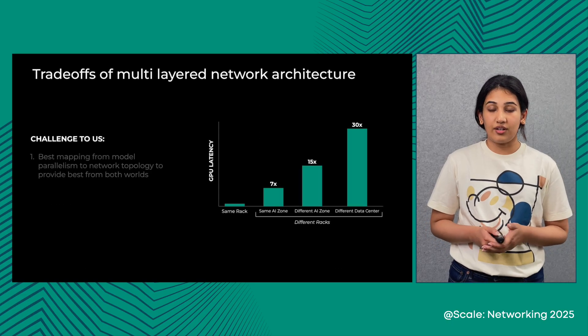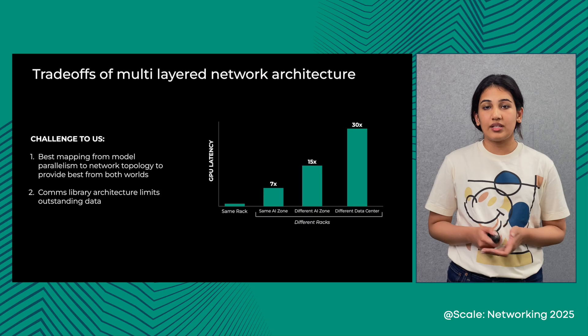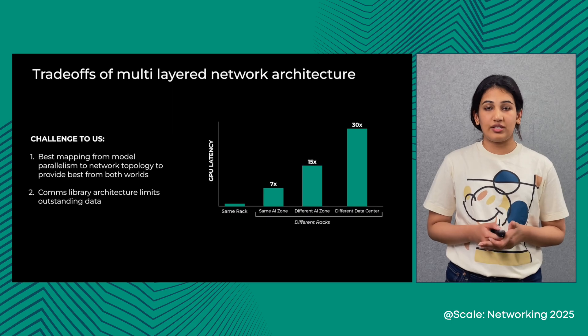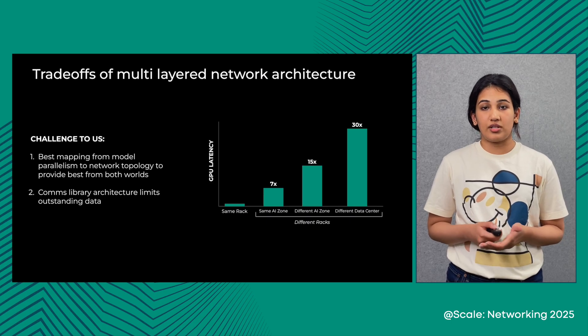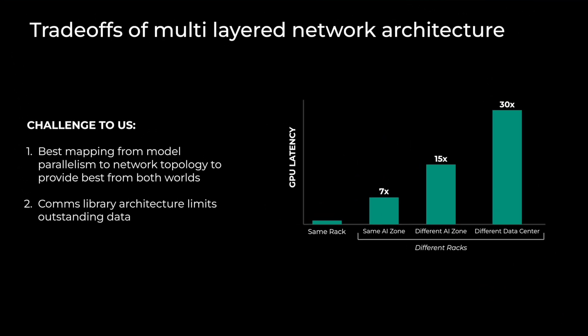What are the trade-offs of this multi-layered network architecture? On one hand, this topology design helps us run jobs at over 100K scale, but on the other hand, it introduces high latency. Specifically, GPUs within the same rack have the lowest latency, whereas GPUs in a different rack, the same AI zone, a different zone, or a different building have nearly 7x to 15x to 30x higher latency.